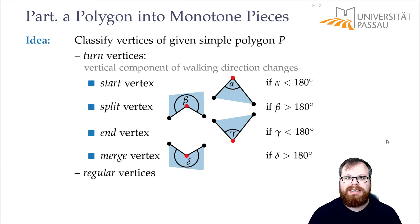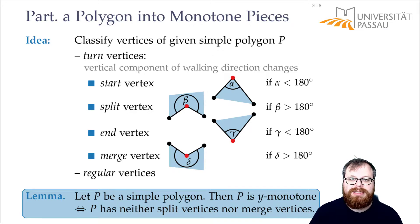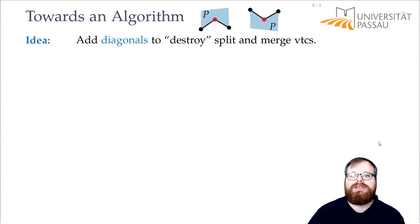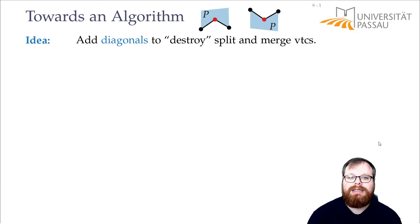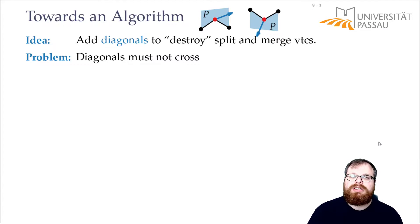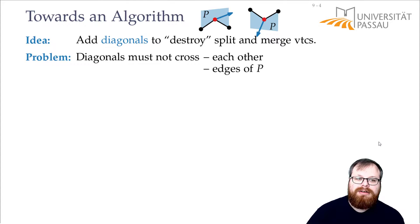This observation we can formulate as a lemma: if we have a simple polygon, then it's y-monotone if and only if we have neither split nor merge vertices. So if I give you some polygon and it has a split or a merge vertex, you want to get rid of them. Our task is to destroy all these split and merge vertices by adding diagonals. The problem is we cannot just add any arbitrary diagonals — we have to make sure that these diagonals do not cross each other and do not cross the boundary of the polygon. So we have to find an algorithm to add these diagonals in a non-crossing fashion.